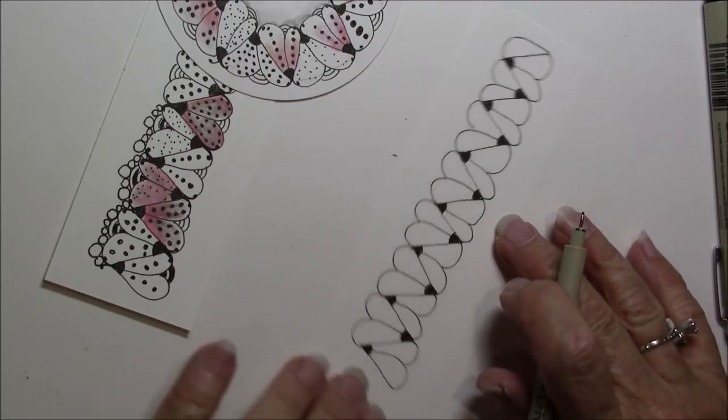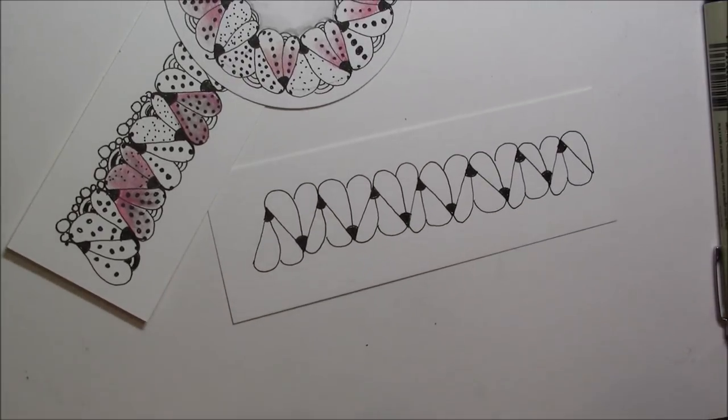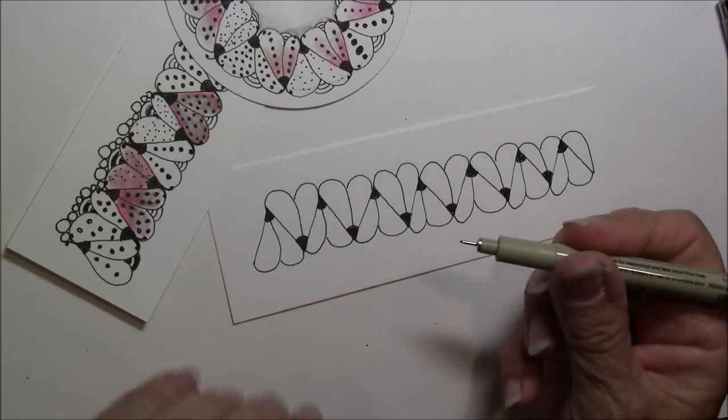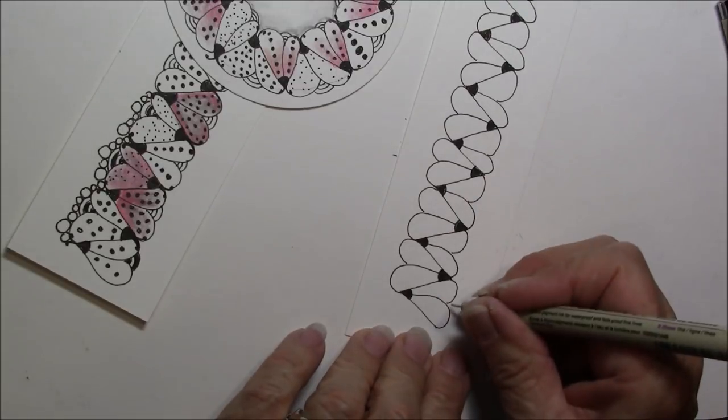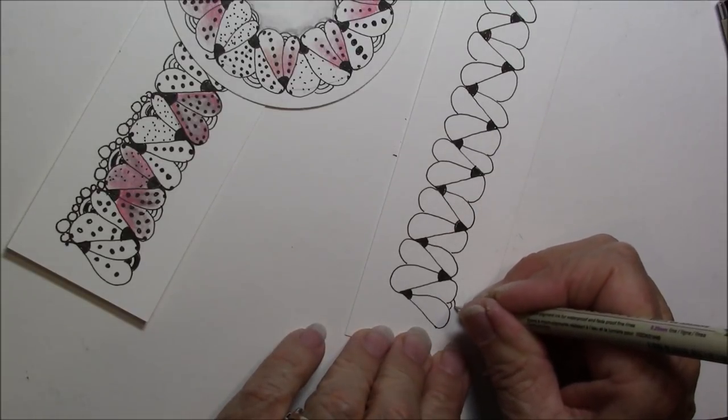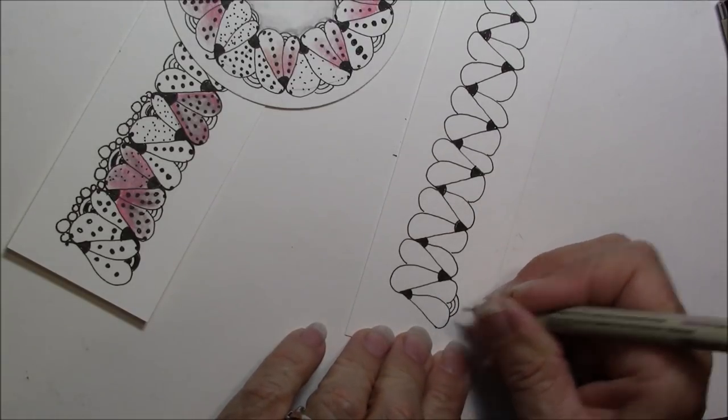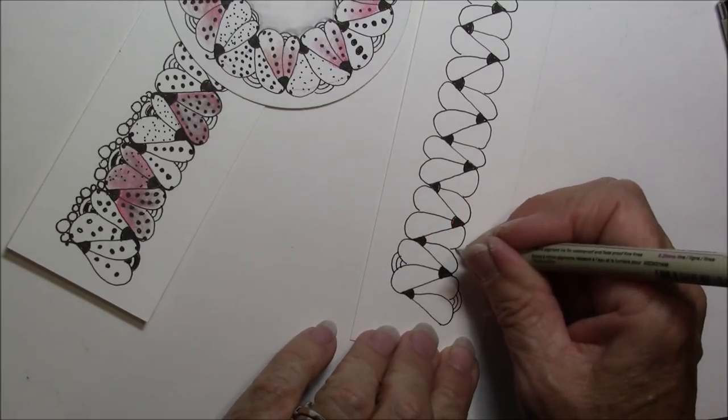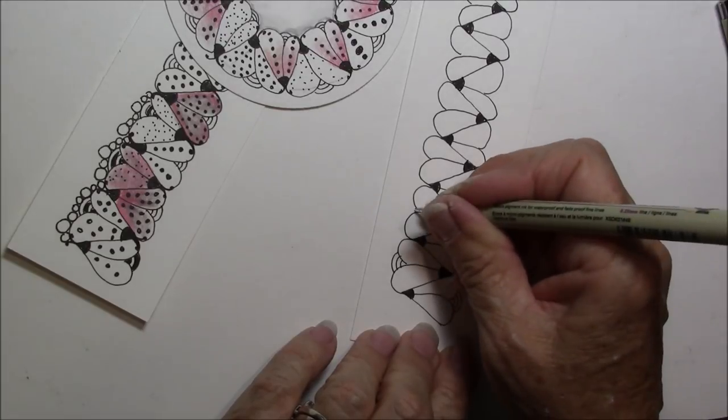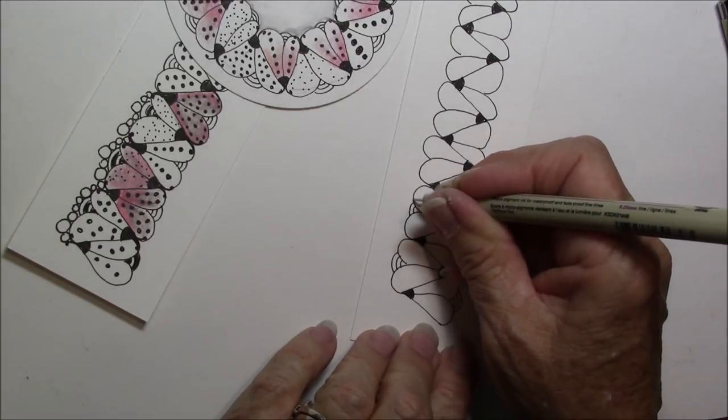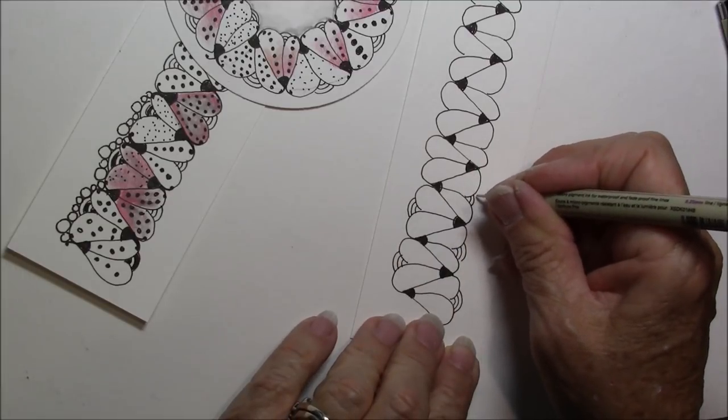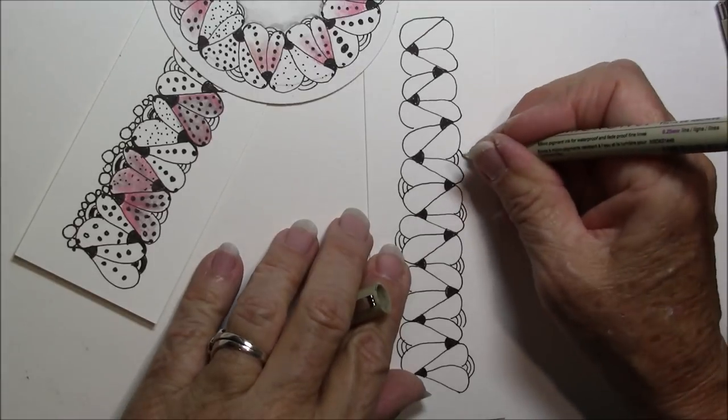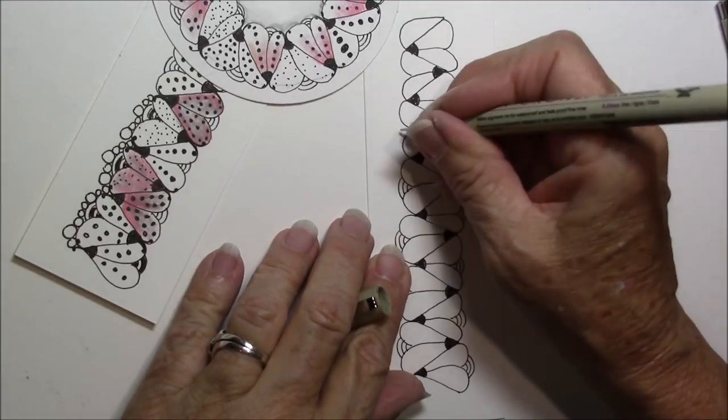All the way down I fill that in and now I'm going to switch back to my 01 and I'm just going to put three little echoed lines right here in the tip, where that heart, kind of opposite of what I just did.